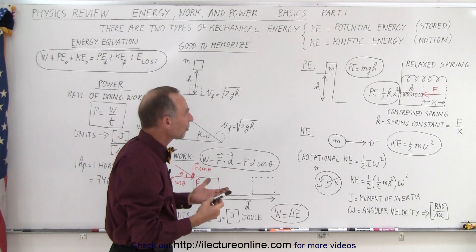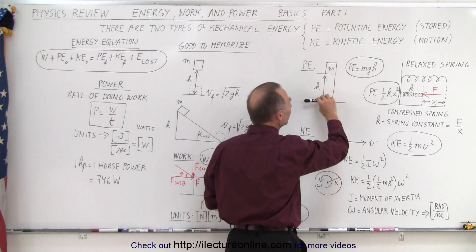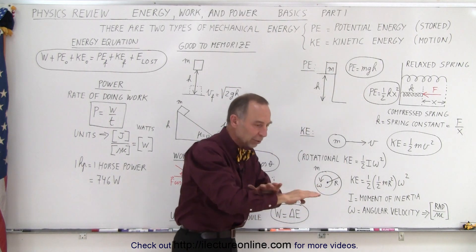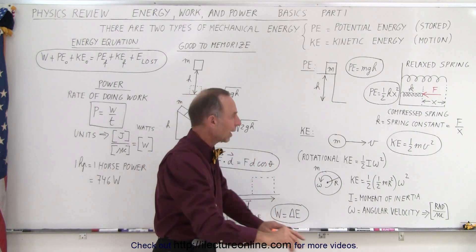So some simple examples of potential energy would be an object being placed at a height above the ground level. So we define the ground level, whatever we want it to be. It could be the tabletop, could be the ground level, but typically it's the ground.